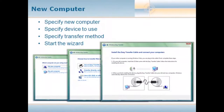On your new Vista computer that you've just purchased or just built, you run this wizard and specify that this is the new computer. You can also specify which device to use and which transfer method you're going to use. Because if you have an older computer, it obviously doesn't have the Vista Easy Transfer Wizard. So what you're able to do is essentially build a disk and run the wizard from this disk over on the old machine to help you kick off this transfer.